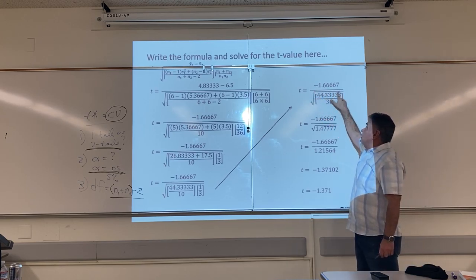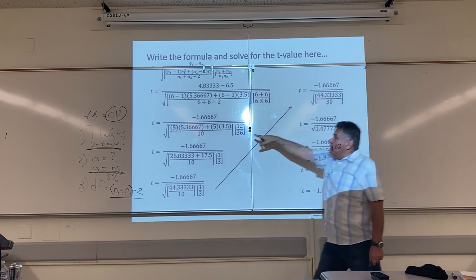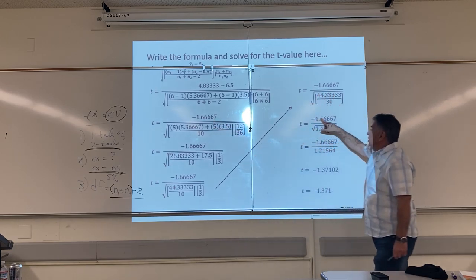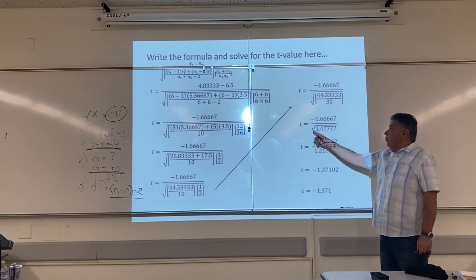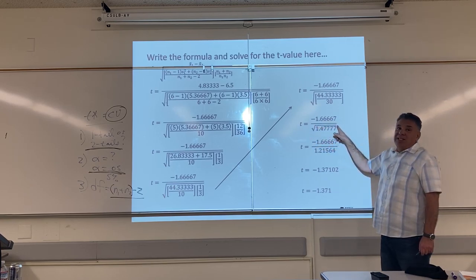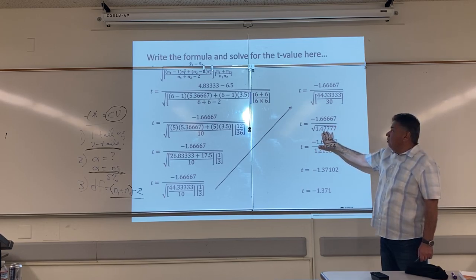So here's my square root, 44 and a third divided by 30. It's underneath the difference, negative 1.66, 666, negative 1 and 2 thirds. Remember, the square root symbol does not disappear until after you have only one number underneath it. I want my answer to be correct to three decimal places. That's why this answer is to 5. I solve for it and I get an answer of negative 1.371.